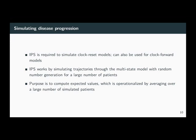Once you've parameterized the model, the next thing to think about is how you actually want to do prediction — that is, how you want to simulate your disease progression. In clock reset models, you really need individual patient simulation to compute state probabilities in any general fashion, so that's typically what we would do. In a clock forward model, there are closed form expressions for computing state probabilities, though individual patient simulation can work as well and still has some advantages.